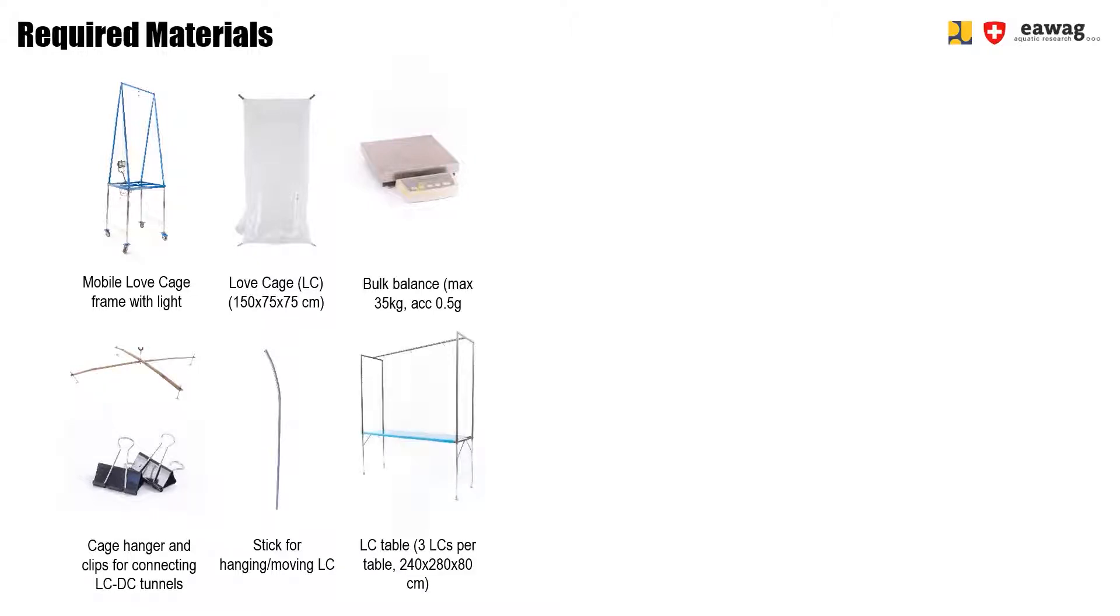The loft cage will be hung up on a loft cage table, which can fit about three loft cages and has a length of 2.4 meters, a height of 2.8 meters, and a width of 80 centimeters.